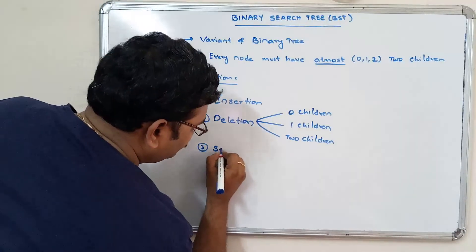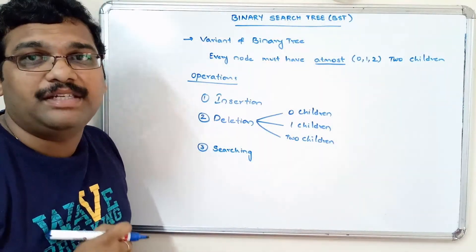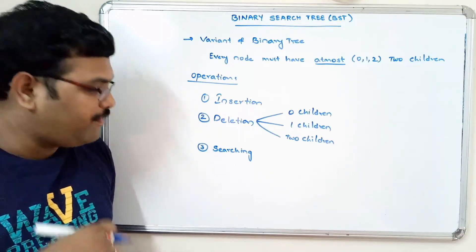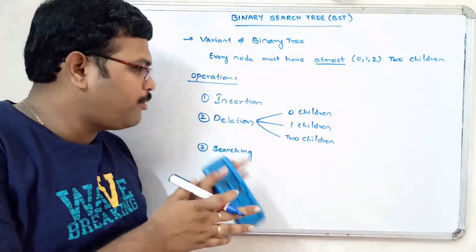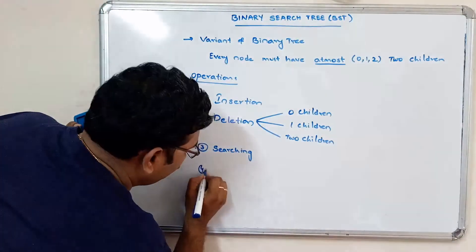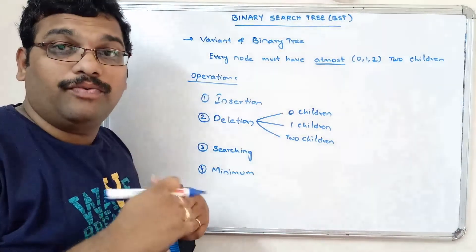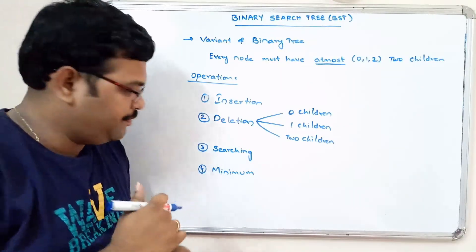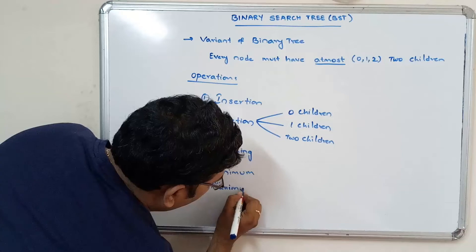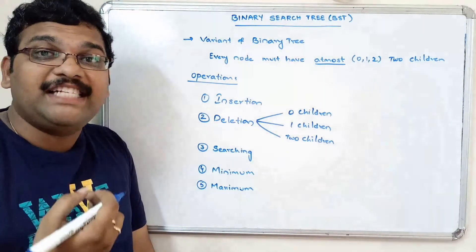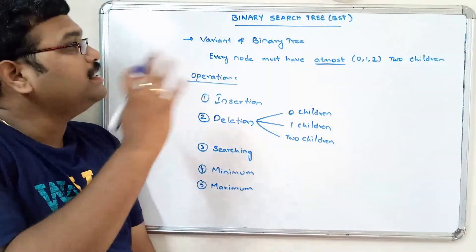The third operation is searching — finding whether a given element is present in the BST by comparing against root nodes at each level. We will also cover finding the minimum element and the maximum element from the BST. These are all the operations we will explore in further sessions on binary search tree.